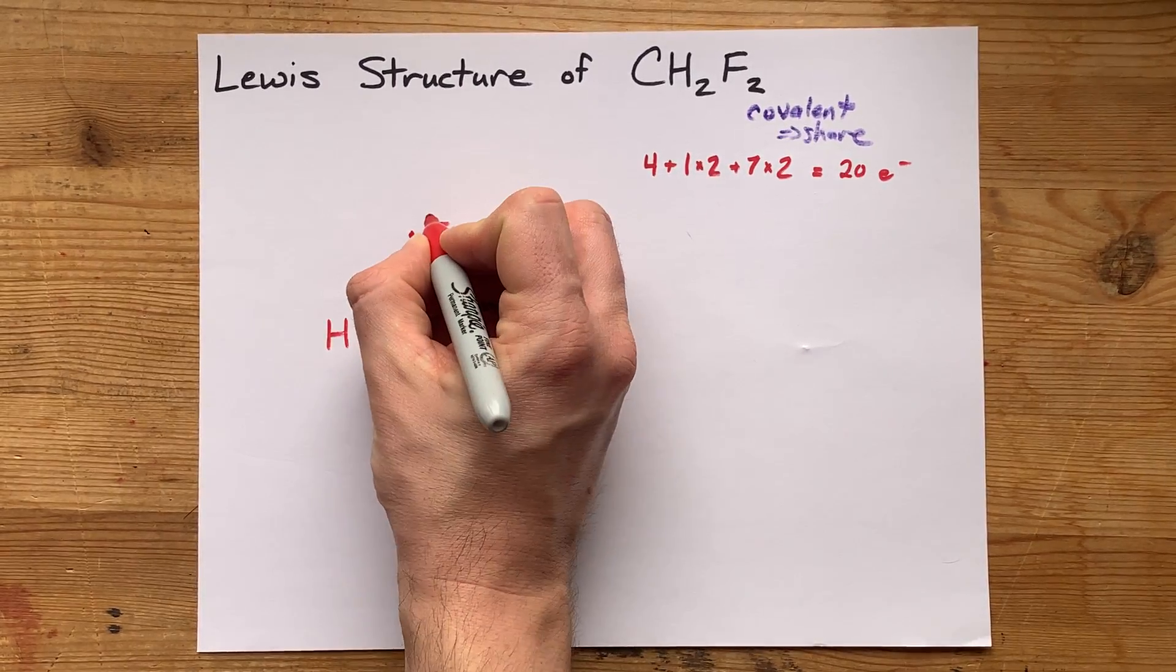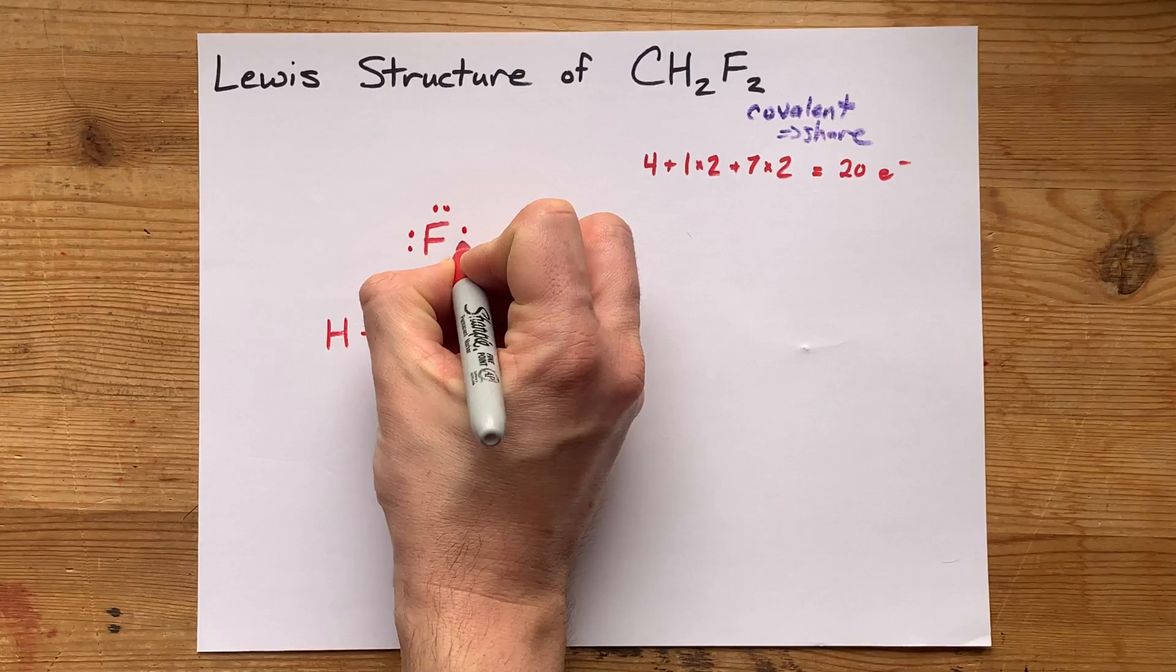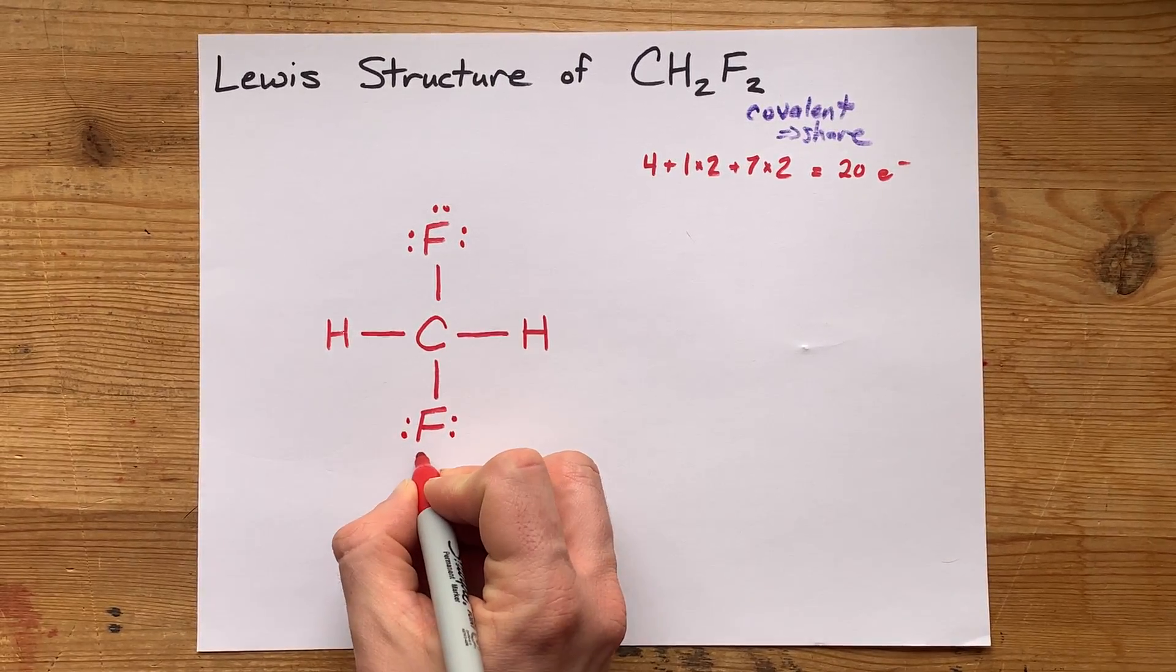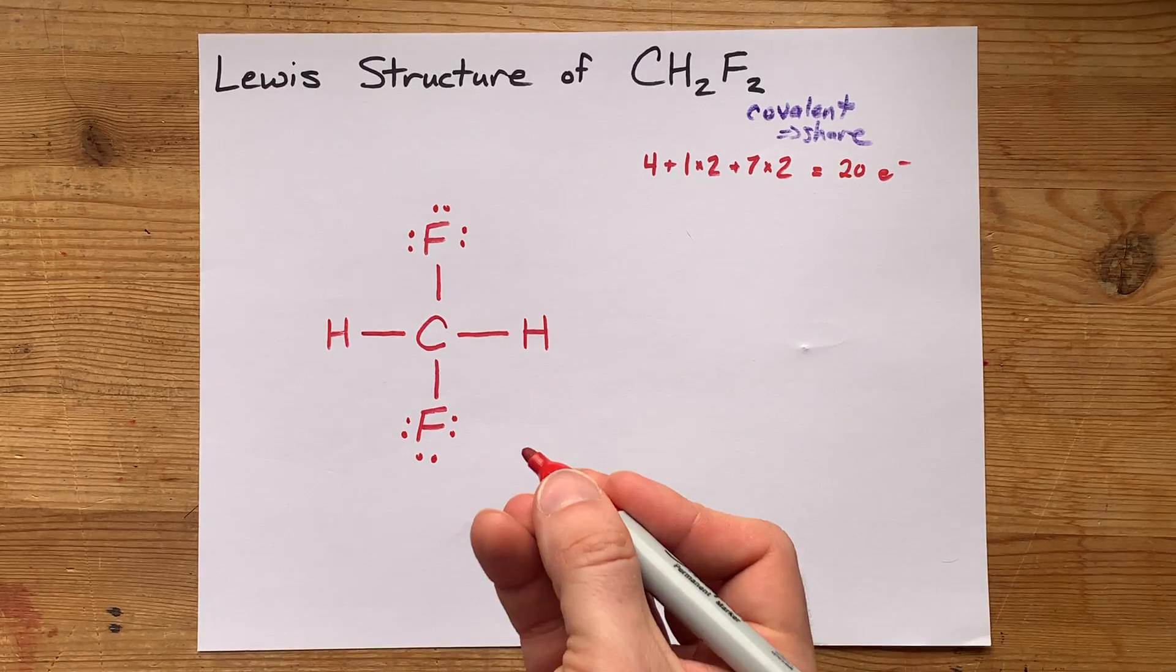So here's 9, 10, 11, 12, 13, 14, 15, 16, 17, 18, 19, 20. There's 20 electrons. I'm at the number that I needed in the structure.